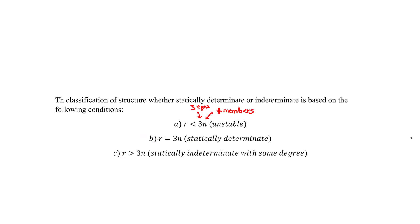The beam is statically determinate if R equals 3N, and statically indeterminate with some degree if R is greater than 3N. You can write this on your equation sheet or memorize it — on the left side is R, the number of reactions, and on the right side is the number of equations.